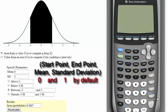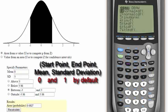The normal CDF function on the TI calculator allows you to find the area between two points on the normal curve. To find it, turn your calculator on, go to second vars, and scroll down to normal CDF.